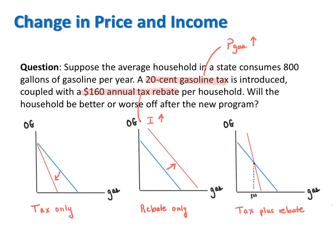If we consider the tax only, we know that increasing the price of gas through a tax will rotate the budget line inward, which will make the consumer worse off because his affordable set will shrink. How this tax affects his consumption of gas depends on the substitution and income effects of the price change caused by the tax.